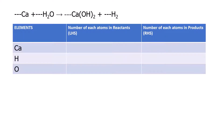In balancing chemical equations we follow the law of conservation of mass, which means the number of atoms on the product side and the reactant side should be equal. Look at this equation: Ca + H₂O gives Ca(OH)₂ + H₂.